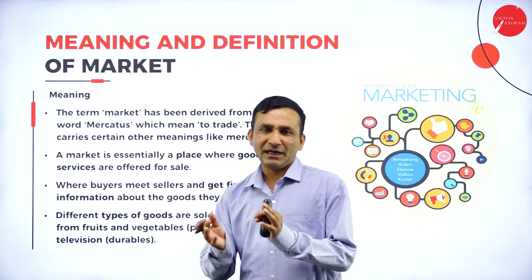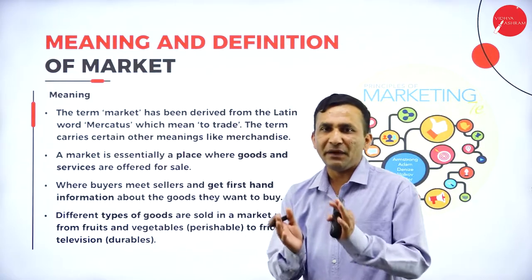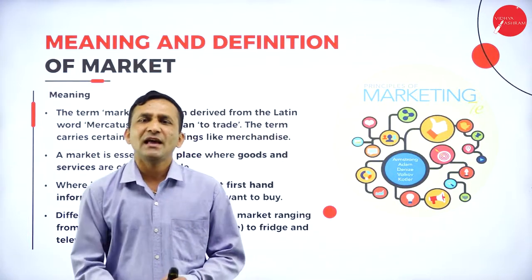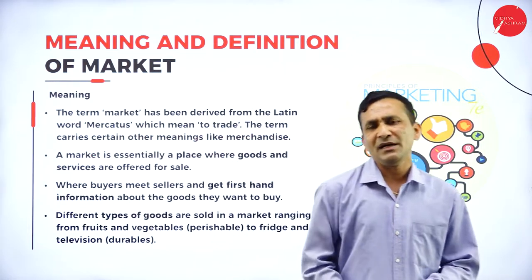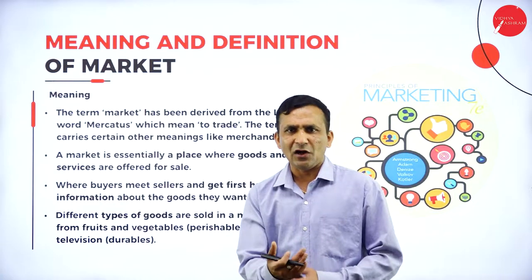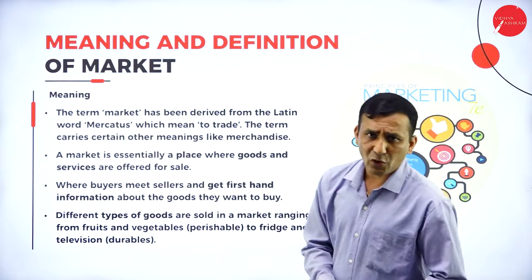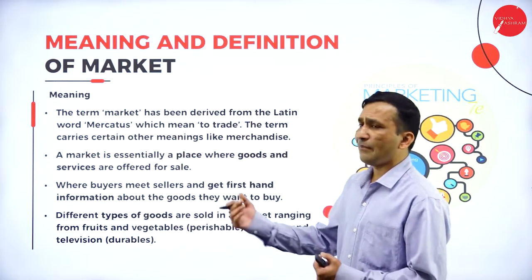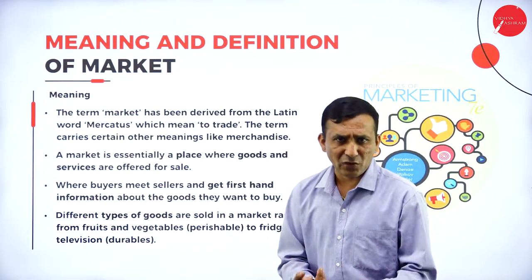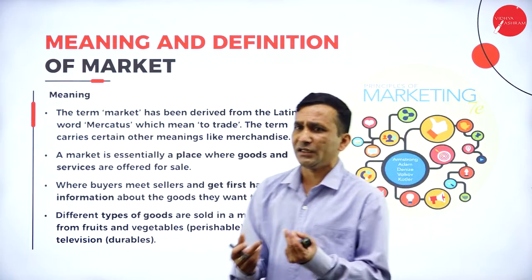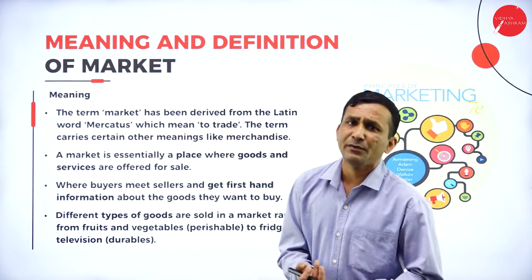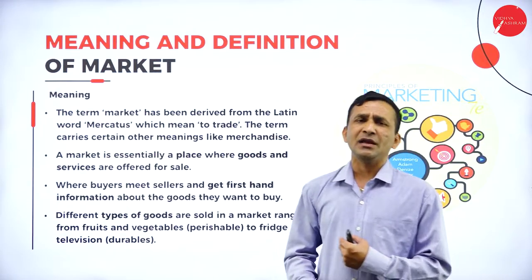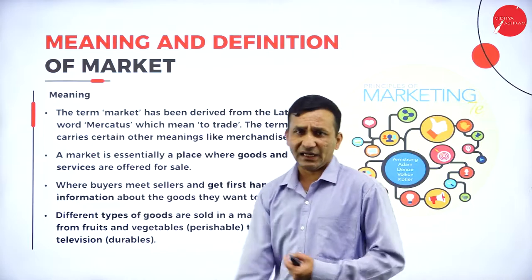What exactly is a market? Market means where the buyer and seller meet at one specific place. The buyer and seller meet to exchange a product or get an offer. Market is also required for collecting firsthand information by both seller and buyer. The term 'market' is derived from the Latin word 'marketas.'